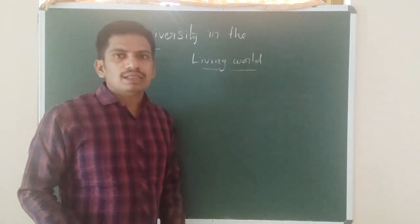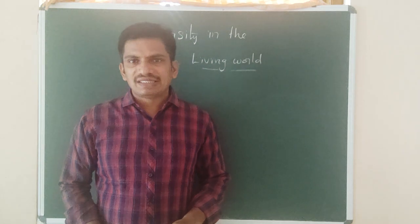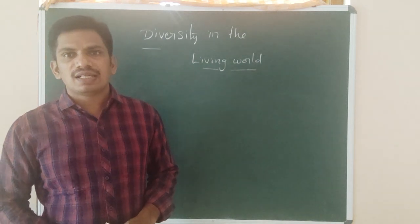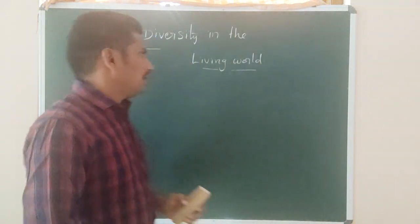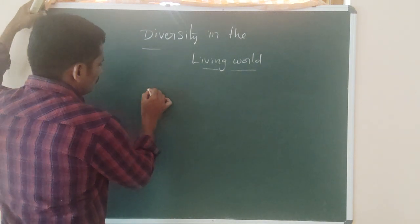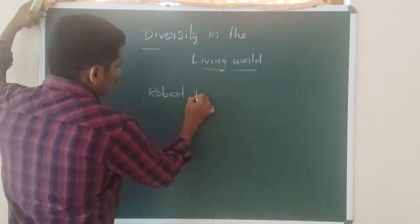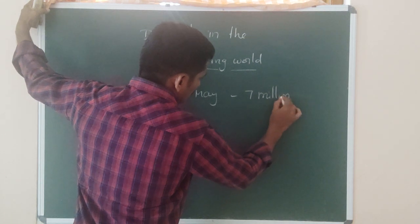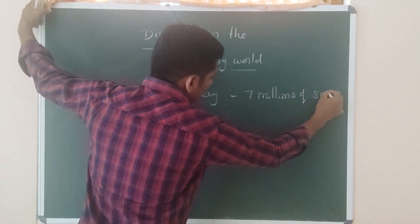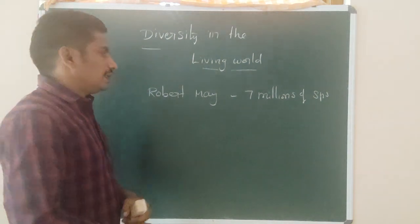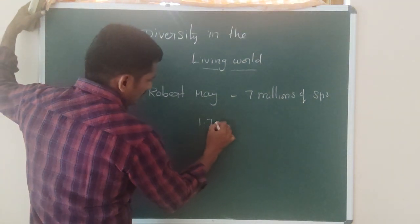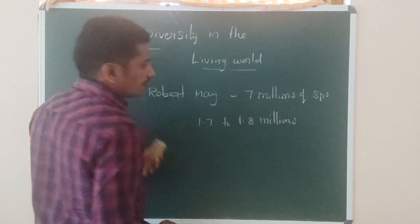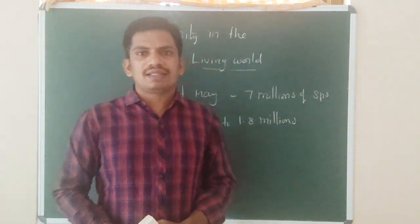Here on the earth planet, a number of fauna and flora are present. The estimation of this number of animals and plants is a little bit difficult. The rough estimation according to Robert May is roughly 7 million species present on the earth. Another estimation is 1.7 to 1.8 million fauna and flora present on earth.